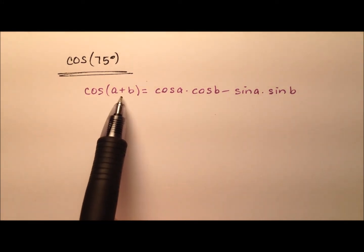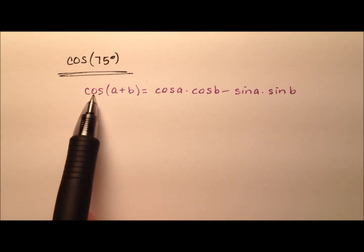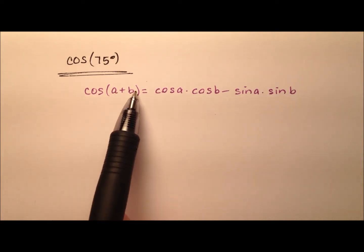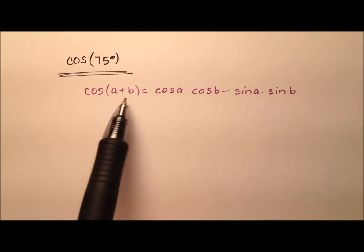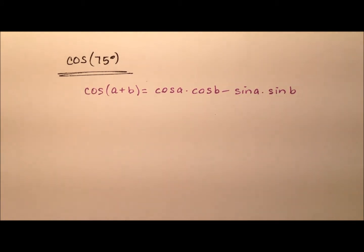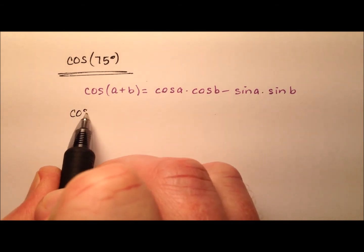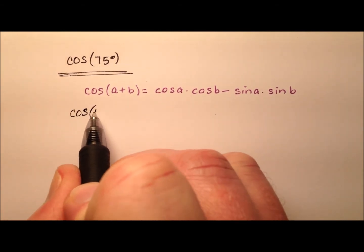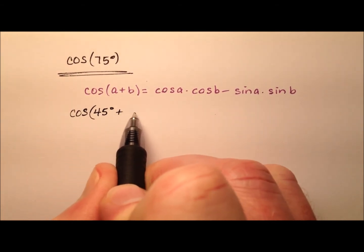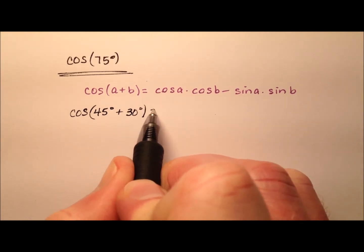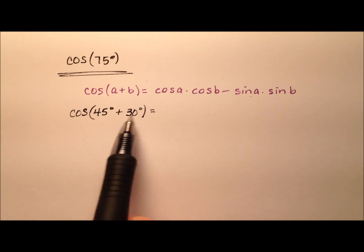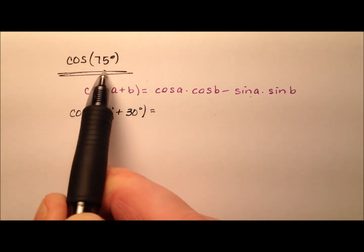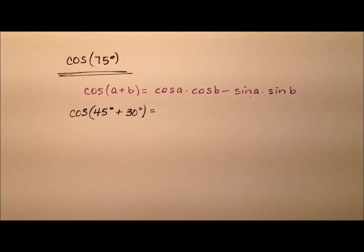First of all, we're going to be using the sum identity for cosine. We need two angles that are nice to work with when we use this expansion, but they need to add up to 75 degrees. So it seems like it would be really good to use 45 degrees and 30 degrees, because we know both the sine and cosine for 30 and 45 degree angles, and 45 and 30 also add up to 75 degrees.